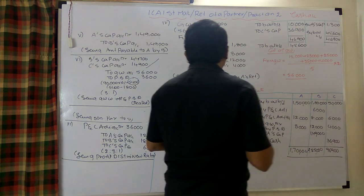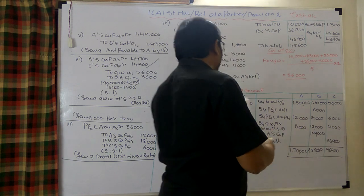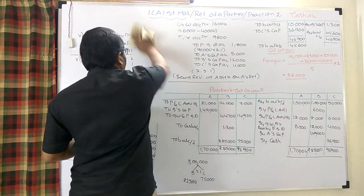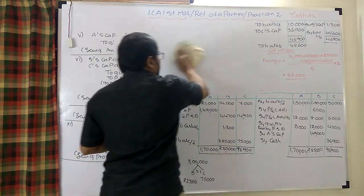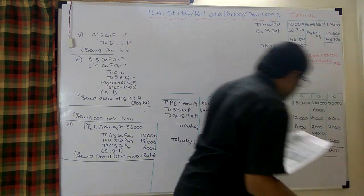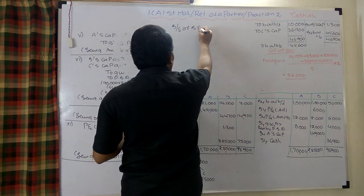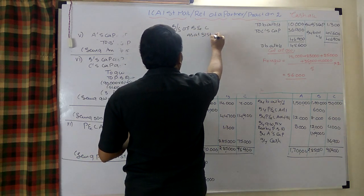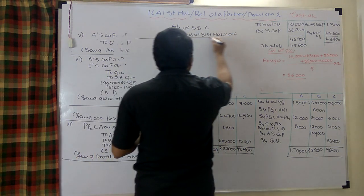The cash balance of 45,600 is carried into the newly reconstituted balance sheet. Using the old balance sheet as support, we now prepare the new balance sheet of B and C as at 31st March 2016.